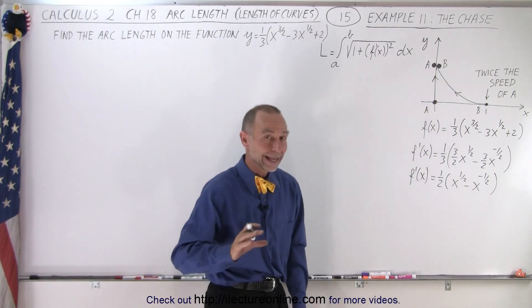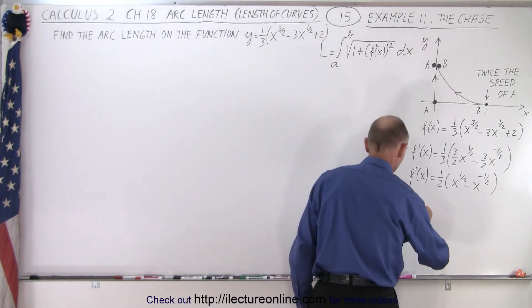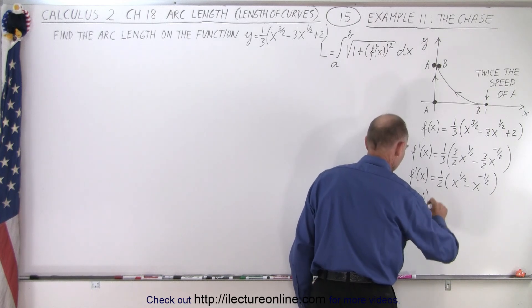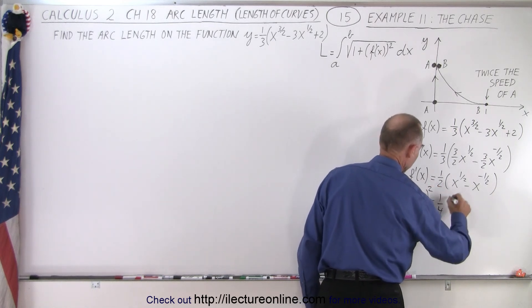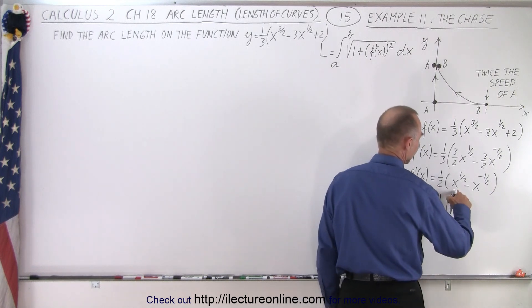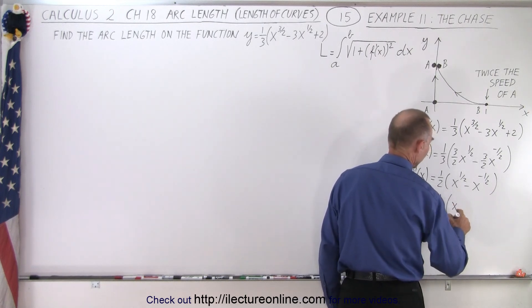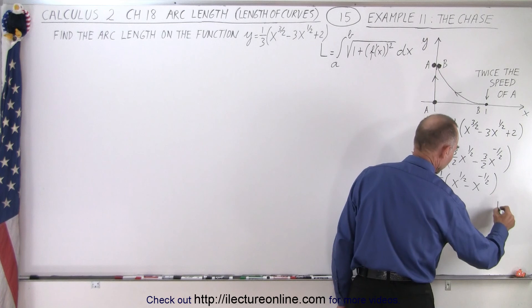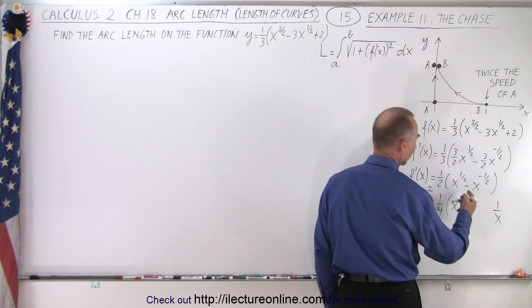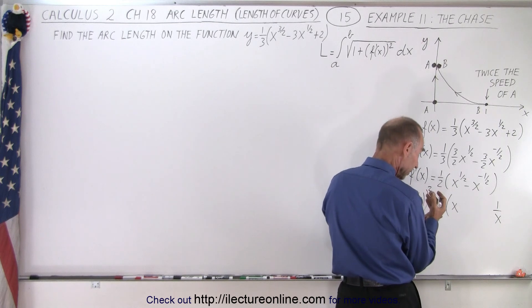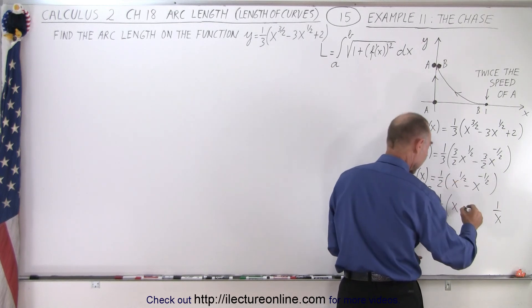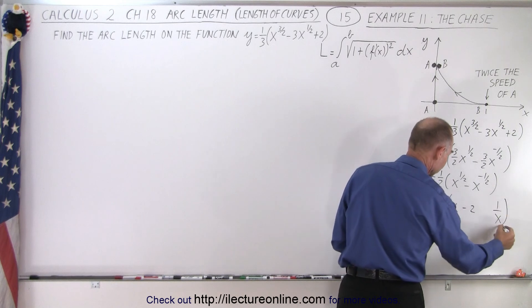Okay, now we can go ahead and square that. So we have f prime of x quantity squared is equal to one-quarter times the first term squared gives us x, the last term squared gives us one over x, and the middle term, x to the one-half times x to the minus one-half, that's one, but the minus is minus one, times two, that gives you minus two, like this.